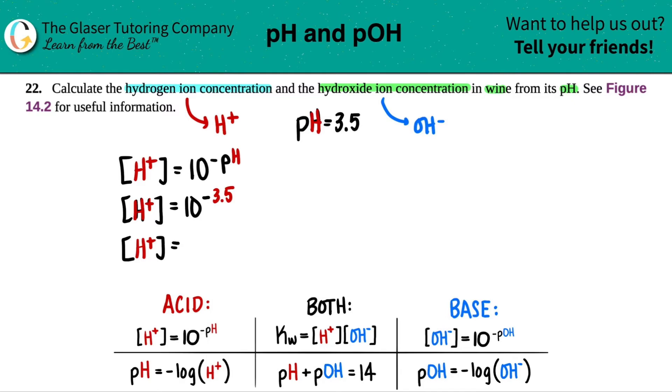10 raised to the negative 3.5. And now if we want to play the sig fig game, just know that the sig figs after the decimal in the pH is the total number of sig figs that you're allowed to use for your H+ concentration.